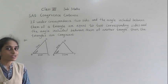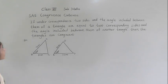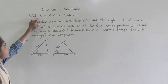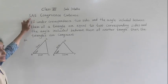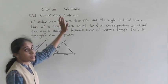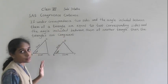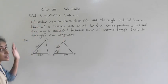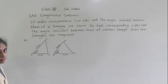Good morning students. Let's start the SAS congruence criterion. SAS means side, angle, side congruence criterion. See, two sides and this angle is included — included angle.